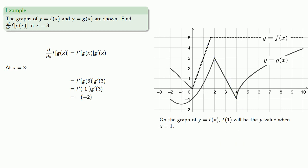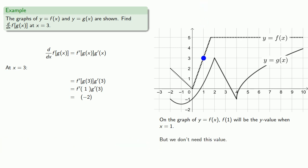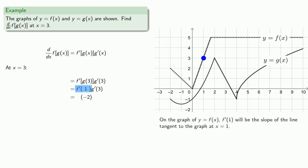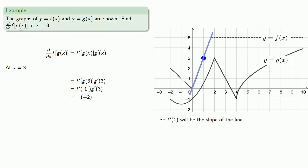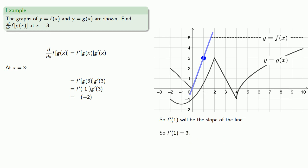On the graph of y equals f of x, f of 1 is the y value when x equals 1. We don't actually need this value, so we won't worry about it. However, we do need the value of f prime of 1. On the graph of y equals f of x, f prime of 1 is the slope of the line tangent to the graph at x equals 1. Since the graph through x equals 1 is a straight line, the tangent line is the line itself, and so f prime of 1 equals 3.